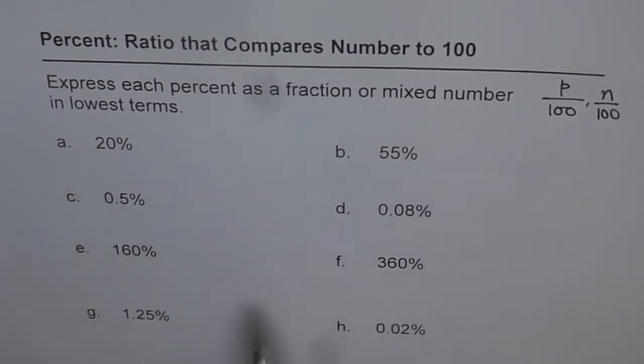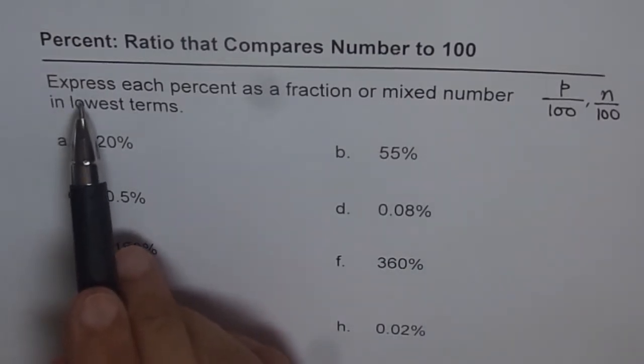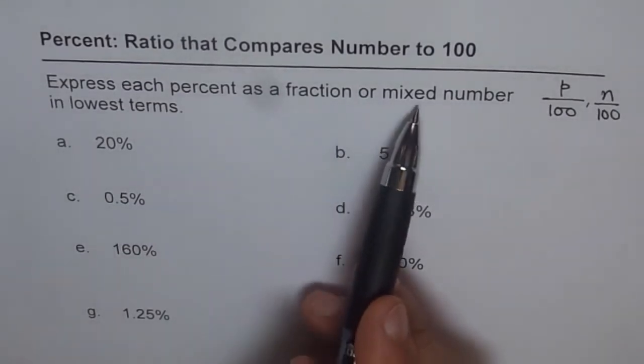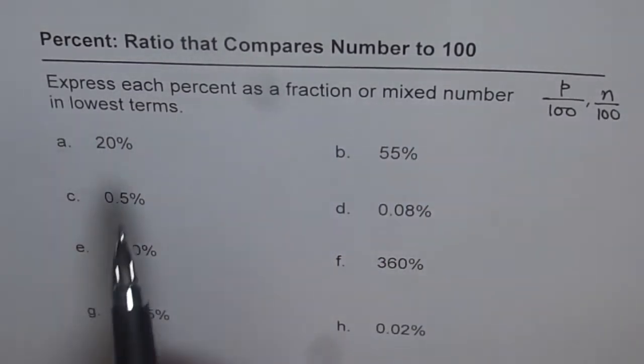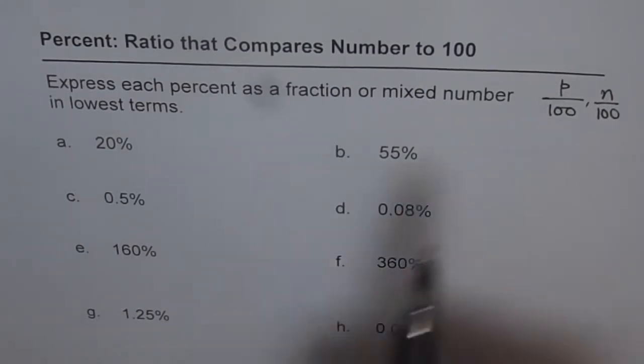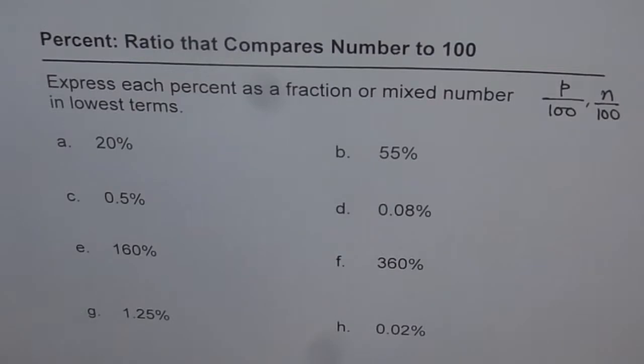So we have similar things here and we need to express each percent as a fraction or mixed number in lowest terms. So that is the exercise for you to do. Now remember one thing, when we say 20%, it means 20 out of 100. So percent is basically a ratio that compares the number to 100. So that is what we understand by percent and this is what we are going to explore and practice here with this particular video. So I will do some of the questions listed here and rest you should copy and do it on your own.